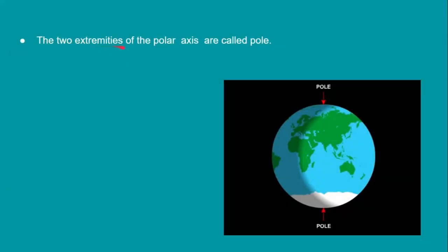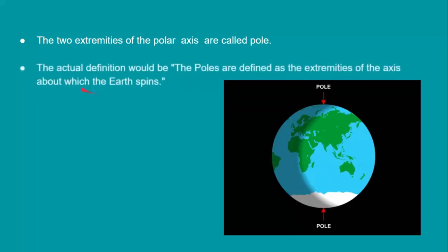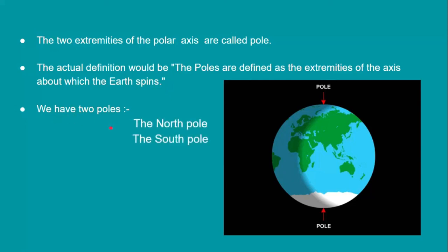The two extremities of the polar axis are called poles. This is our imaginary polar axis, and where these two extremities meet the earth's surface — this one is the north pole and this one is the south pole. The actual definition: the poles are defined as the extremities of the axis about which the earth spins. We have two poles: north pole and south pole.